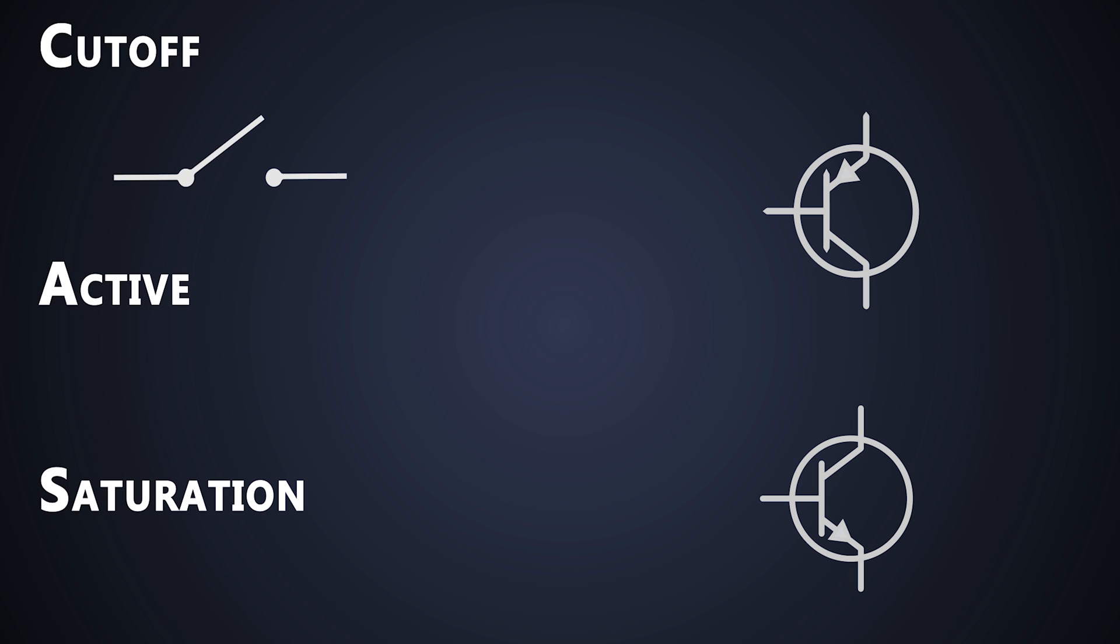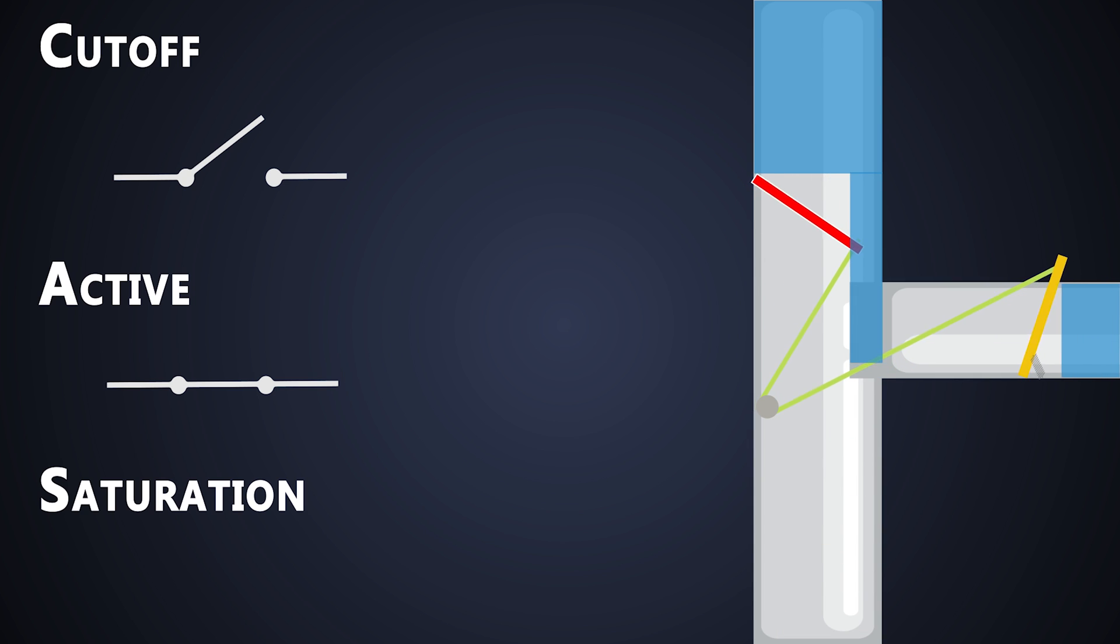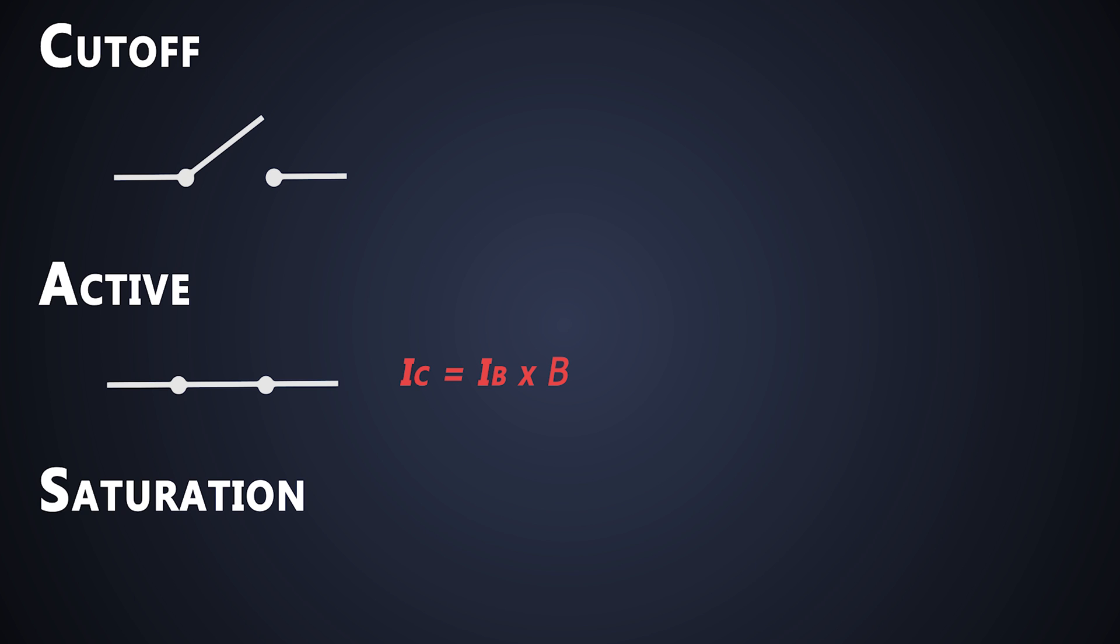In the active region, the transistor is on and collector current is proportional to the base current. If we see this analogy, the amount of water flowing through a vertical pipe is proportional to the water force applied at the horizontal pipe. So the relation between collector current and base current is given by this formula, where beta is the gain of the transistor. In this region, the BJT is used as an amplifier.